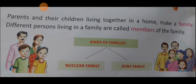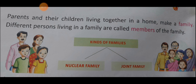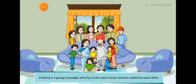Kinds of family — family is of two types: nuclear family and joint family. Nuclear family means small family. A family in which only mother, father and their children live together is a nuclear family. A family is a group of people who live in the same house and are related to each other.